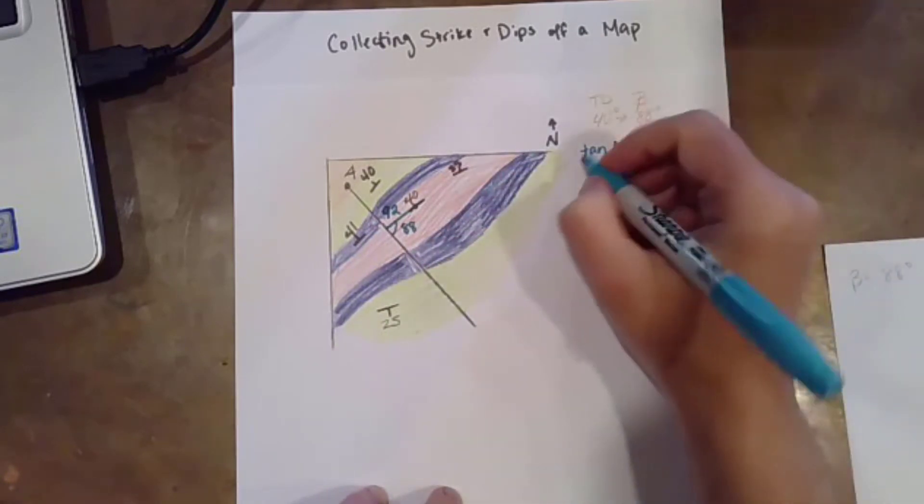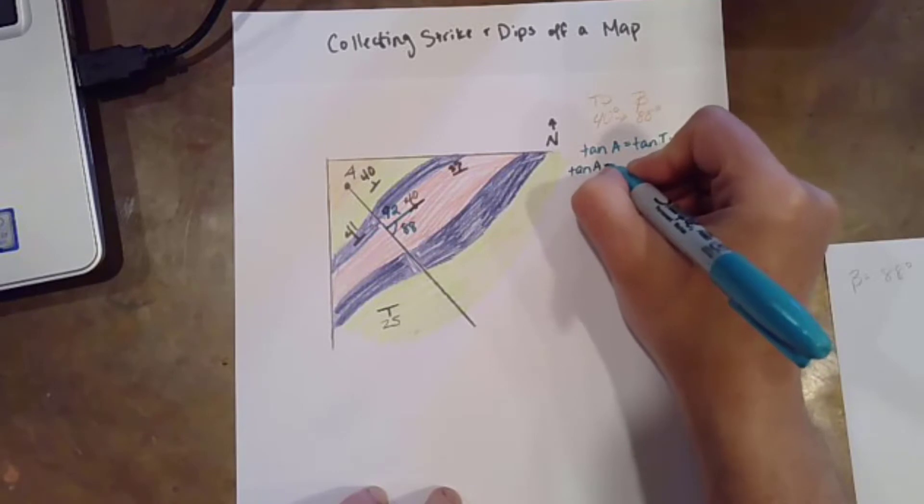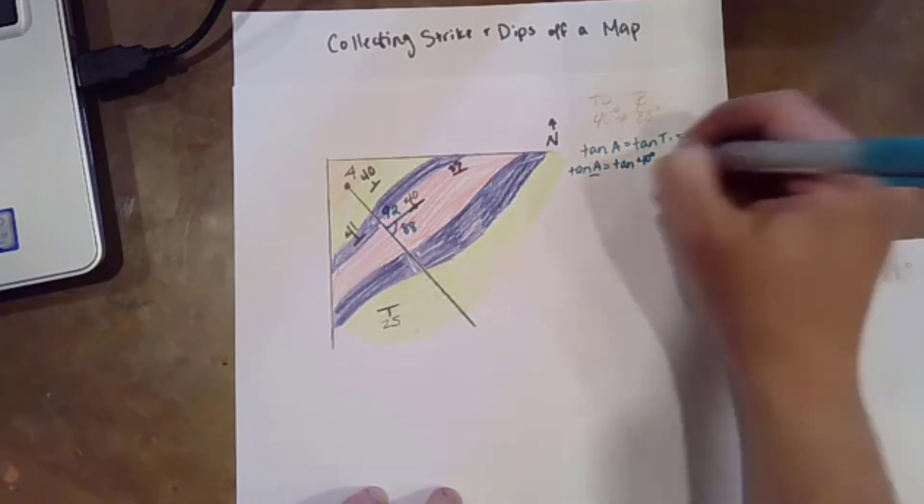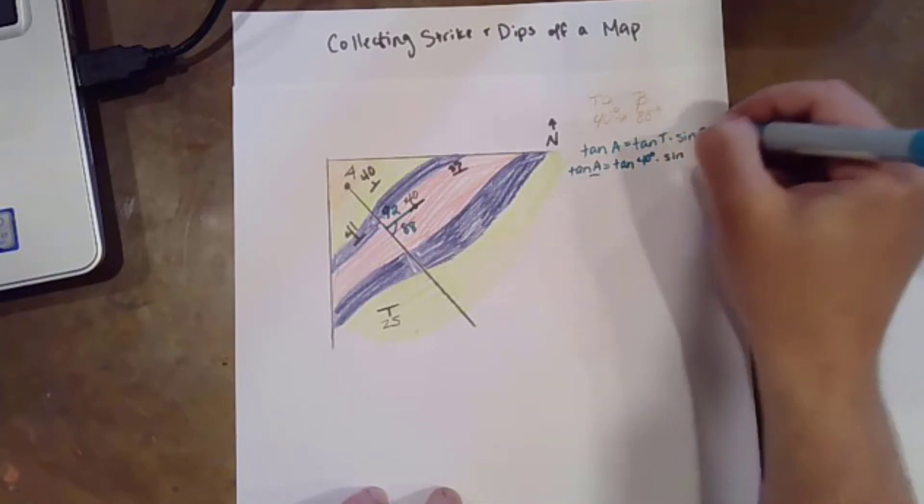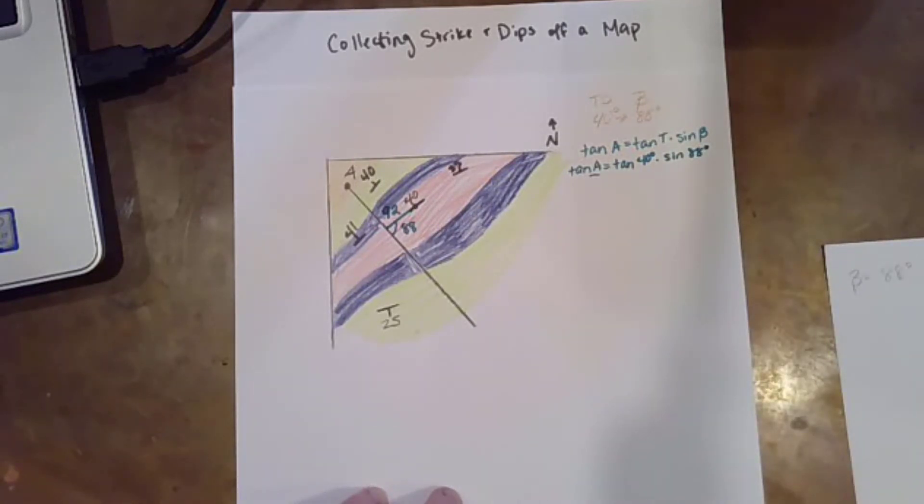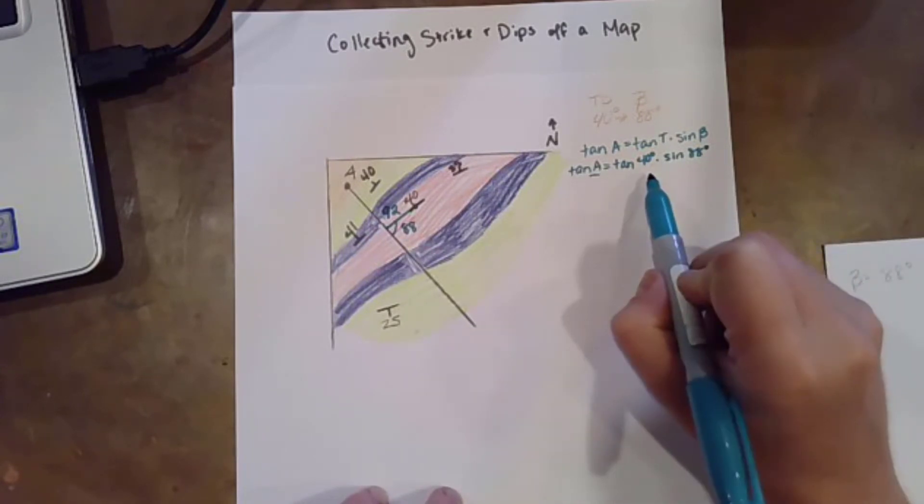So over here, I'm going to do tangent of apparent dip, which is what I want. The closer you are to 90 degrees, the closer your apparent dip is going to be to your true dip.